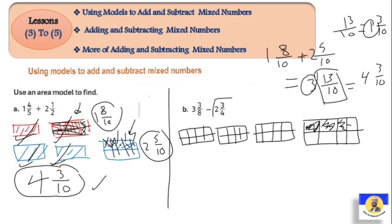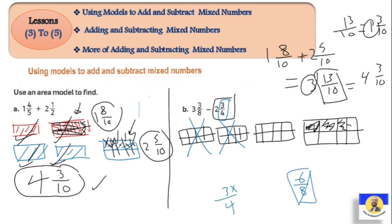Now we need to subtract two and three over four. We cancel two complete shapes - one, two. Now we still need to remove three over four. Three over four equals six over eight, because we multiplied by two up and down. So three over four is equivalent to six over eight.